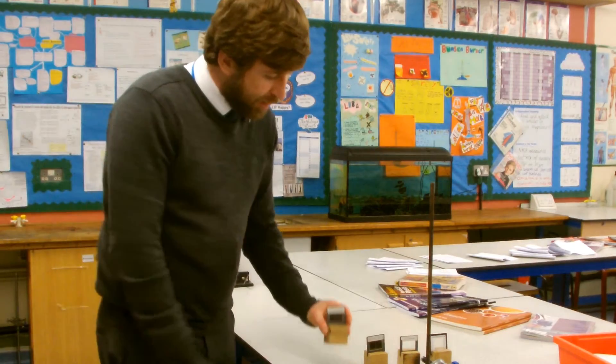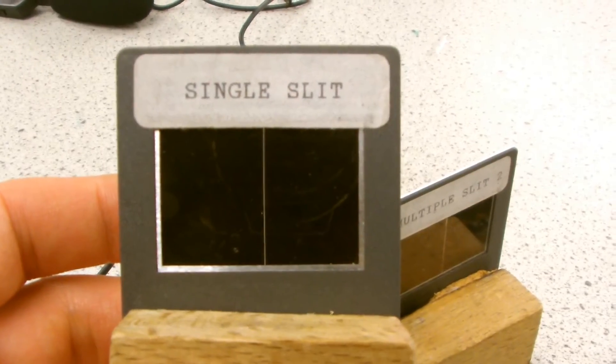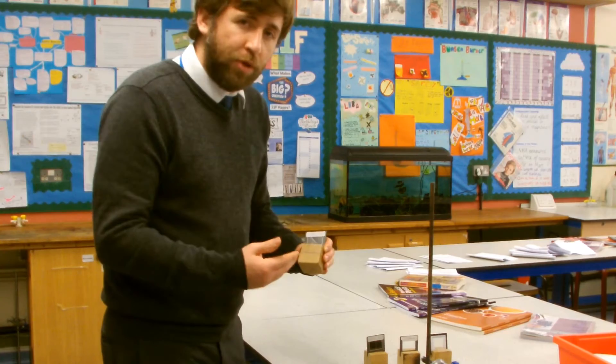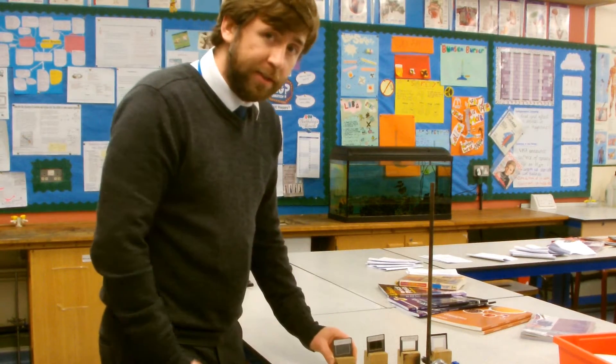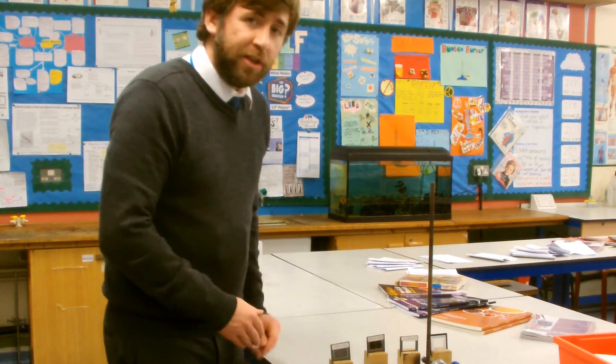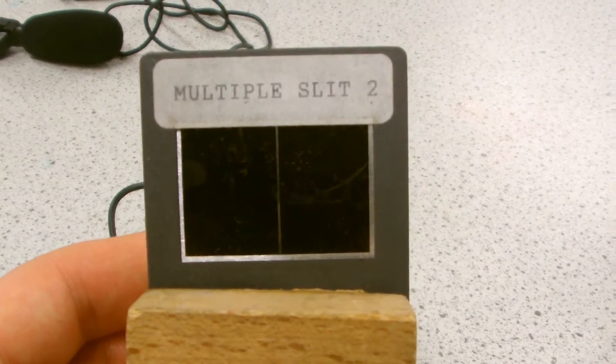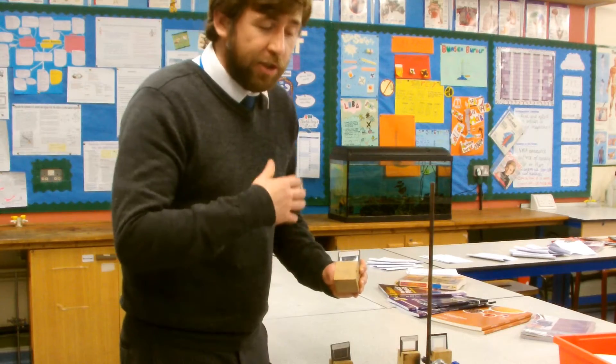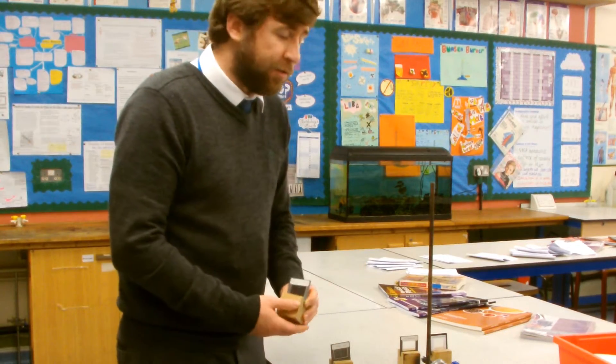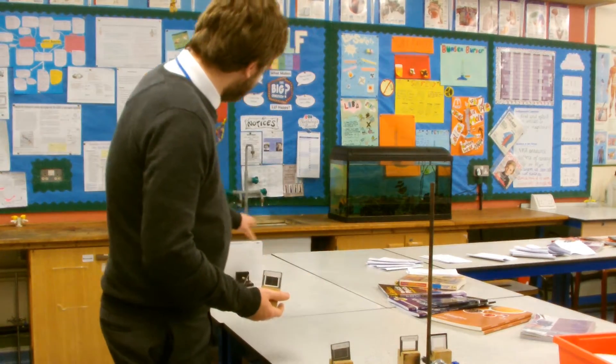What's going to happen when the light approaches this single slit here, this gap which is approximately the same wavelength as light, is we're going to get a semicircular diffraction pattern. Then I'm going to show you through this multiple slit, this double slit and you're going to therefore get two diffraction patterns next to each other and that's going to cause our interference pattern.